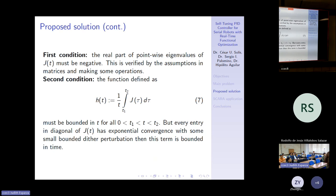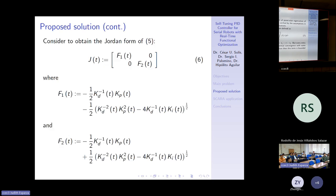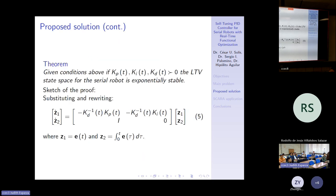Now, for LTV systems, it's important to satisfy the conditions. The first condition: the real part of point-wise eigenvalues of J must be negative. This is verified by the assumptions in matrices and making some operations, mainly this condition.